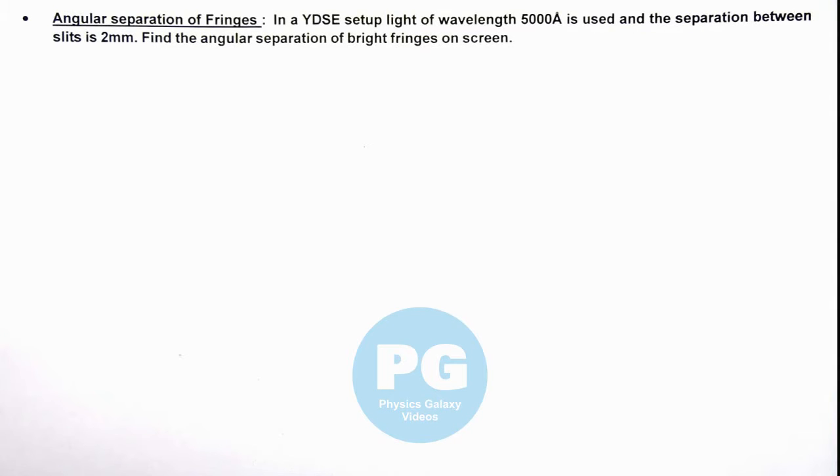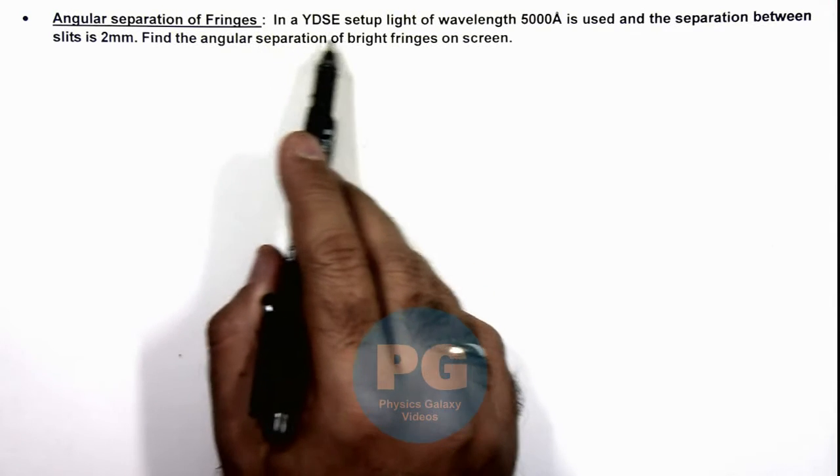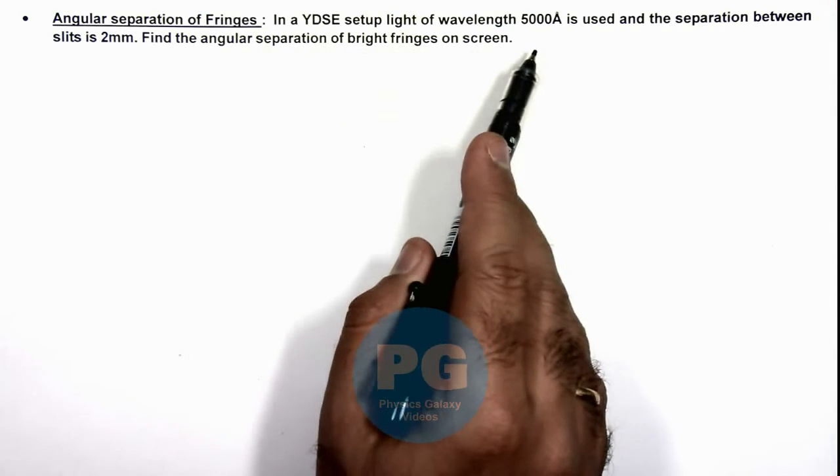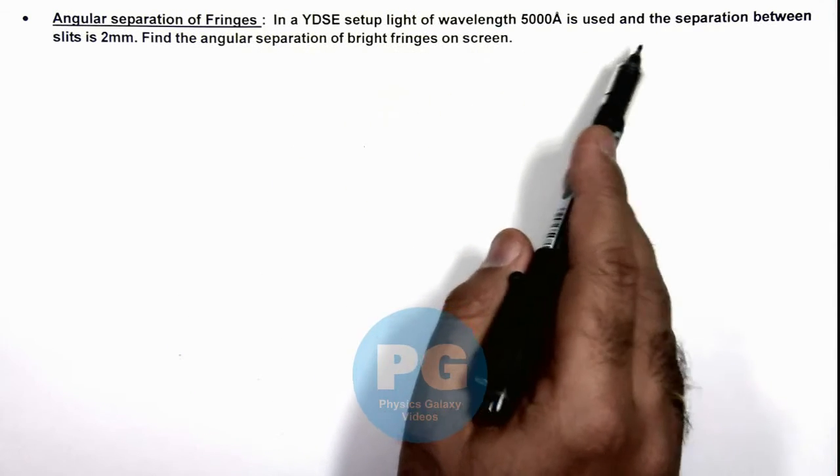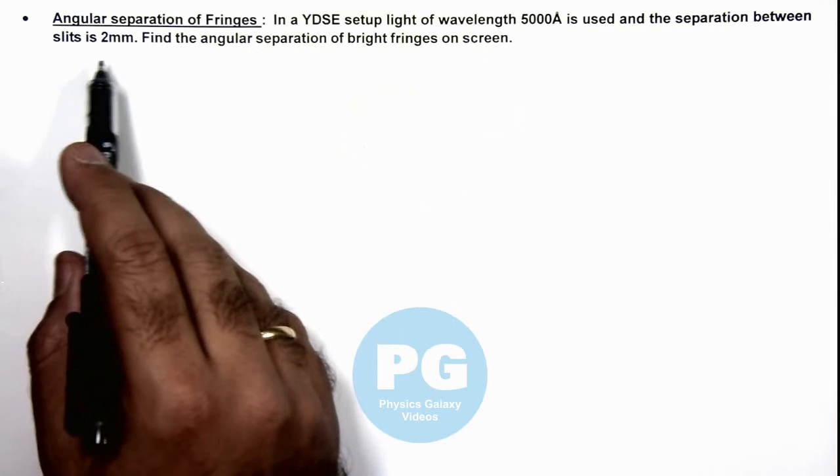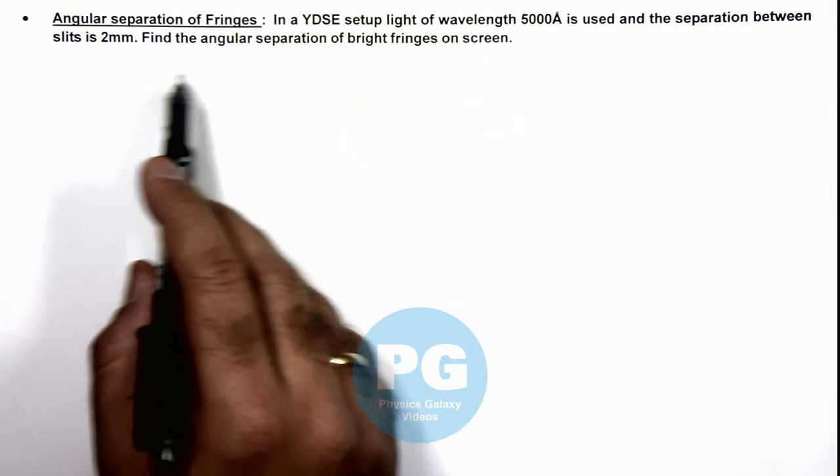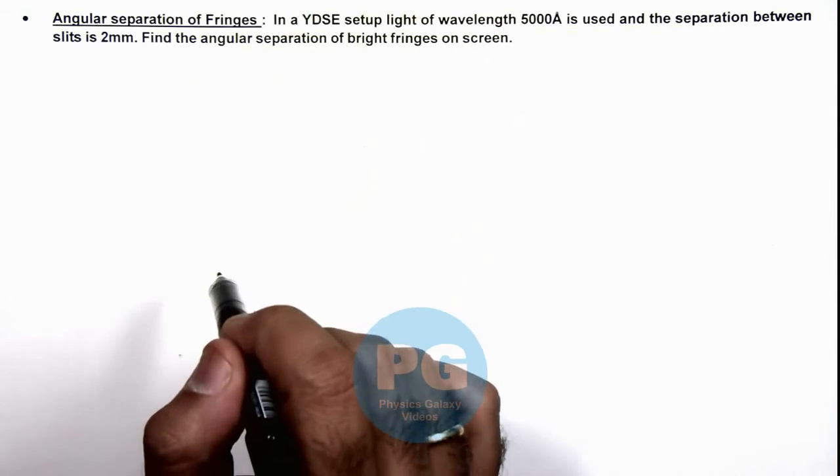In this illustration, we'll analyze the angular separation of fringes. In a YDSE setup, light of wavelength 5000 angstrom is used, and the separation between slits is 2mm. We are required to find the angular separation of bright fringes on screen.